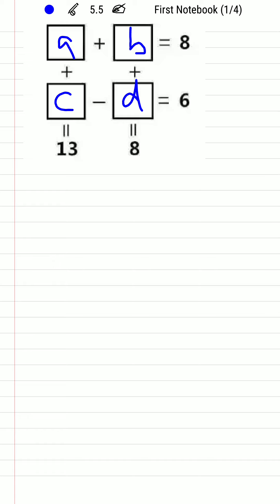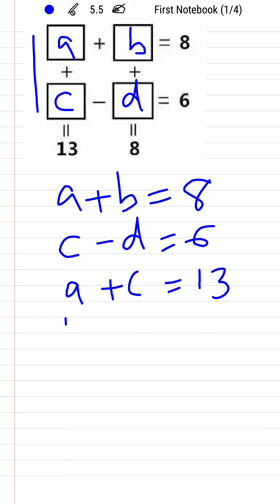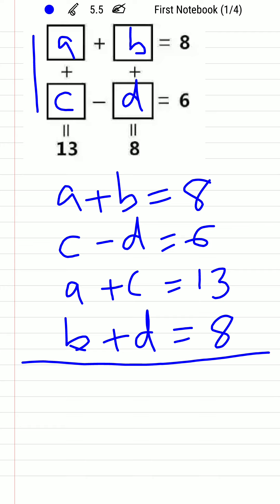From the figure we can write four equations: a + b = 8, c − d = 6, and column-wise: a + c = 13, and b + d = 8. So we have four equations and four unknowns: a, b, c, and d.